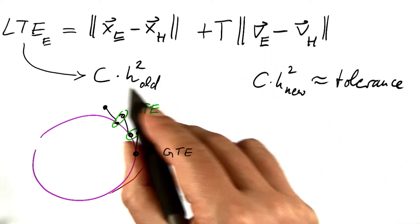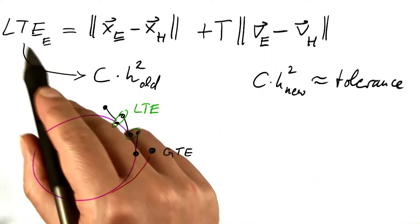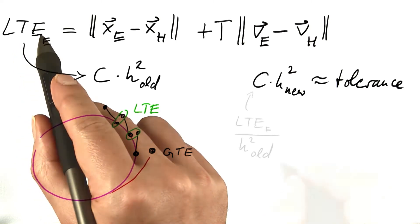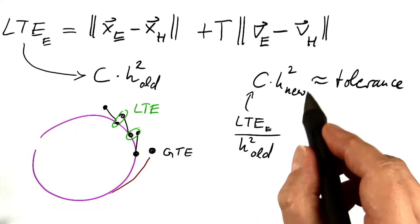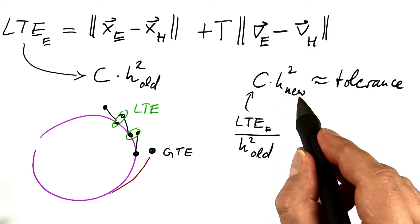I can compute C from that very first step. It would be the local truncation error divided by h squared old. And I can solve for the new step size.